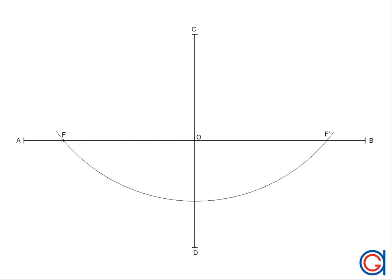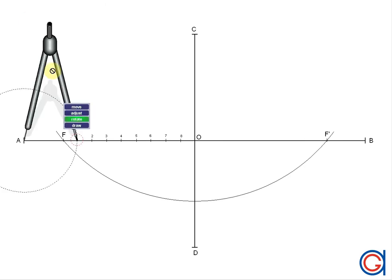The next step is to mark various points between the center O and the focal point F. We are going to mark eight points, and we are going to number these points from one to eight, as can be seen here.